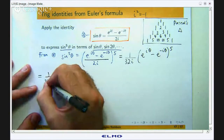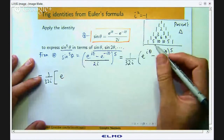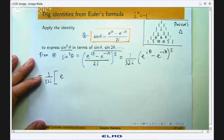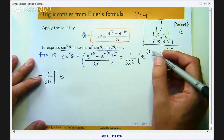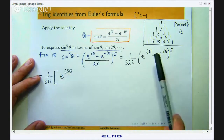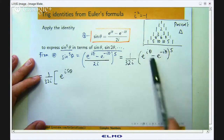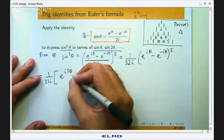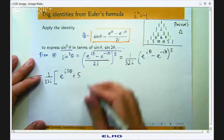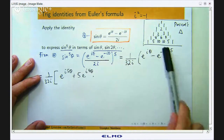Alright so let us expand this out. I have got 1 over 32i which I will leave alone. The first term is e to the iθ all to the power 5, which using index laws becomes e to the i5θ. Then I decrease the power on this and increase the power on the other, using the coefficient 5: so 5 times e to the i4θ multiplied by the second term to the power 1.